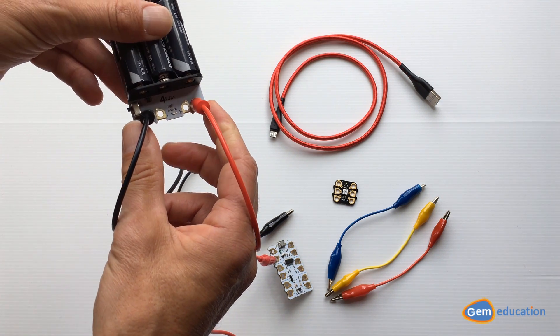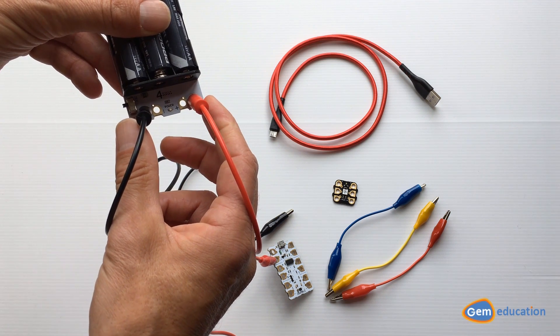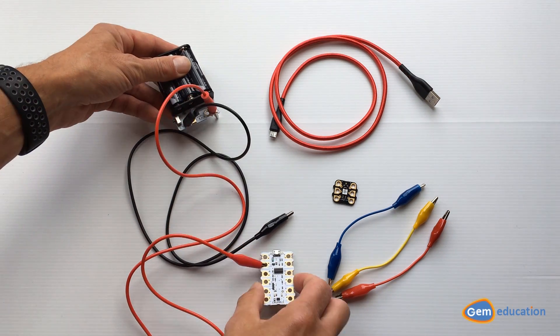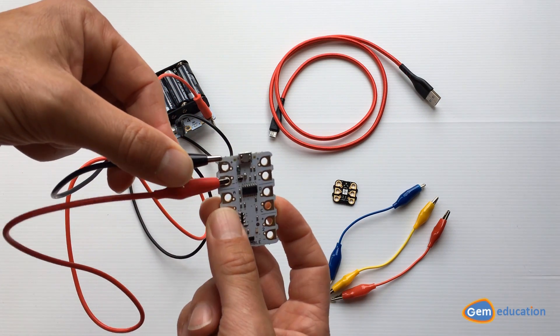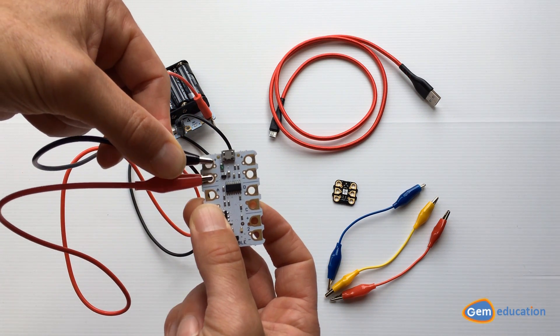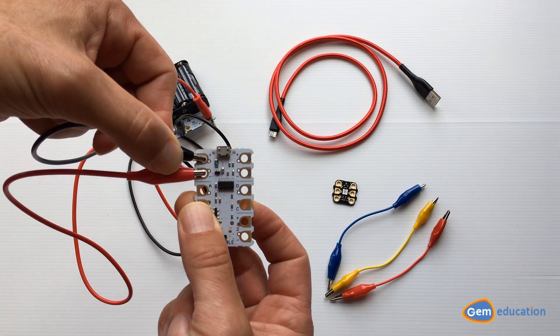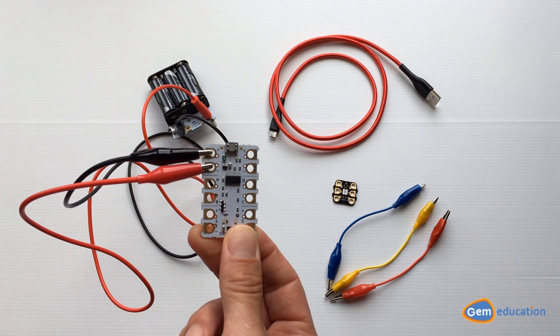With the other end of that lead, I'm going to connect it to the plus in the top left corner of my crumble. So that's my battery pack connected. Now I'm going to connect my sparkle.